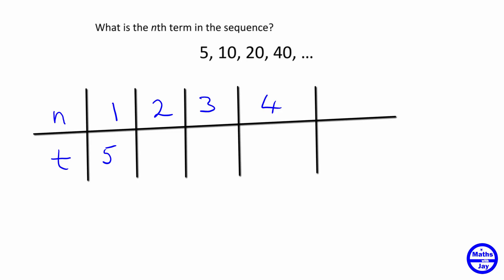So what I mean by that is if we look at the numbers, we've got 5 multiplied by 2 is 10, 10 multiplied by 2 is 20, and 40 is 2 times 20, and so on. So we could see the next number would be 2 times 40, it would be 80.